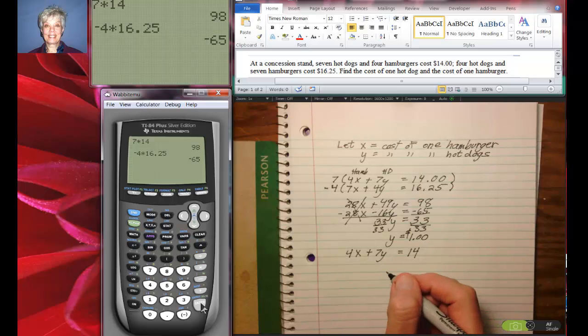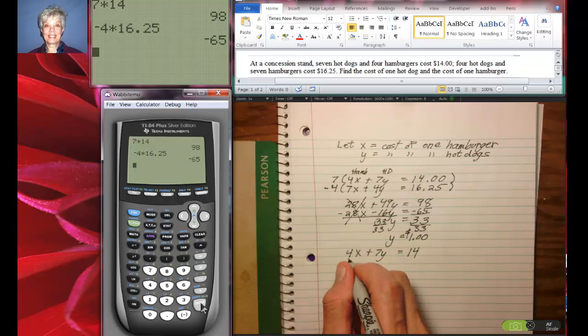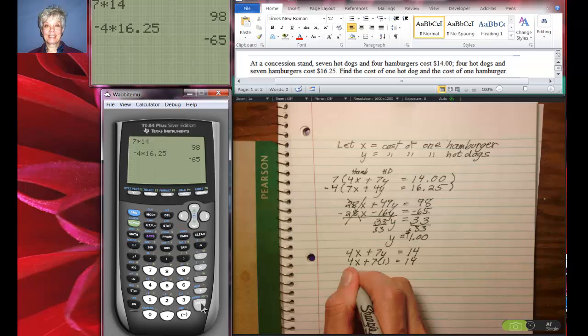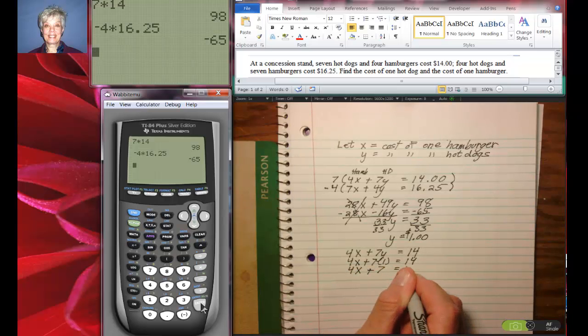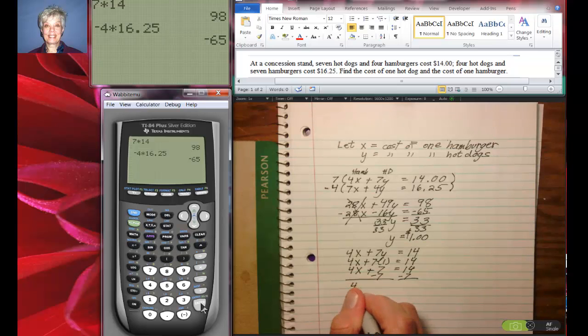Okay, the x's are the hamburgers and I already know what y is, it's 1. This is going to be 4x plus 7 times 1 equals 14. 4x plus 7 equals 14. I'm going to subtract 7 from both sides, and I'll have 4x equals 7.